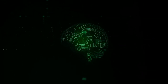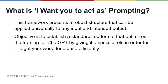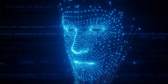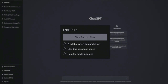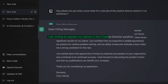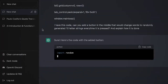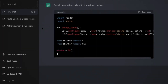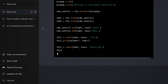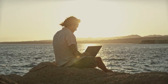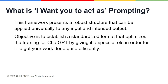So what is 'I want you to act as' prompting? It's a very unique name for this type of prompting. This framework represents a robust structure that can be applied universally to any input and intended output — you can apply this type of prompting to literally any topic or situation. The objective is to establish a standardized format that optimizes the framing for ChatGPT by giving it a specific role, in order for it to get your work done quite efficiently.